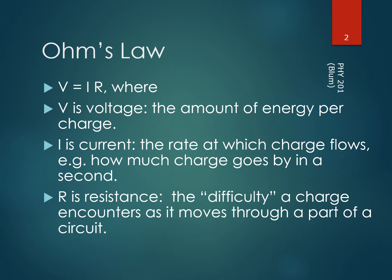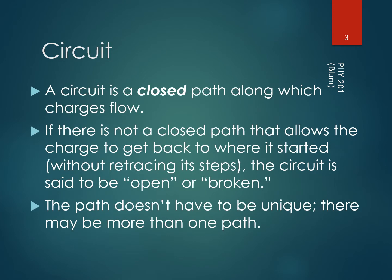Voltage is an amount of energy per charge. Current is the rate at which charge goes by — how much charge passes by a point in the circuit per second. Resistance is the sort of difficulty the charges encounter as they move around part of the circuit. High resistance means it's hard to move around; low resistance means it's easy to move around.